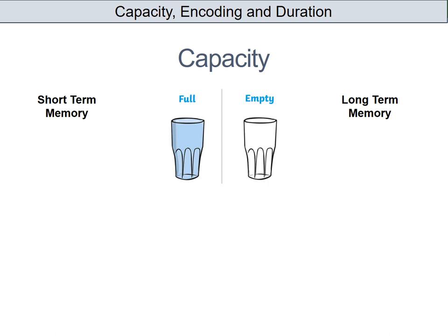For short-term memory the key number is seven plus or minus two units, or five to nine units of information. It's really important when you're writing about the capacity of short-term memory that you use the term 'units' or 'units of information,' because a unit of information doesn't necessarily have to be one number or one letter.